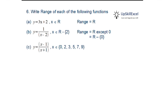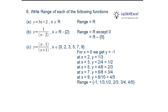For y = (x−1)/(x+1), where x ∈ {0, 2, 3, 5, 7, 9}: we calculate y at each x. For x = 0 we get −1; for x = 2, 3, 5, 7 we calculate similarly. The range is {−1, 1/3, 1/2, 2/3, 3/4, 4/5}.